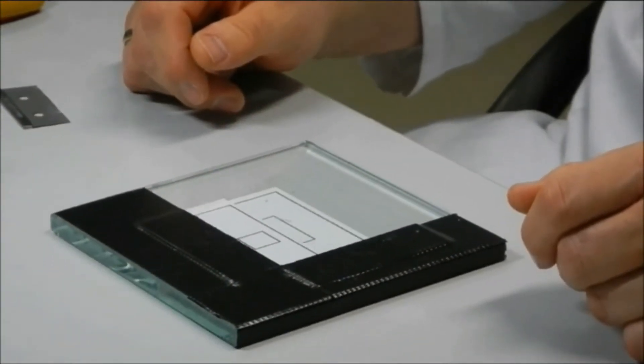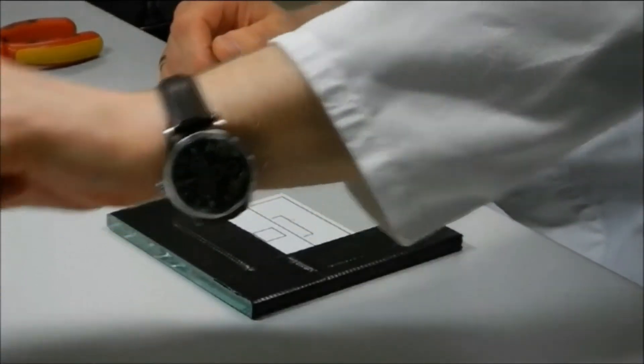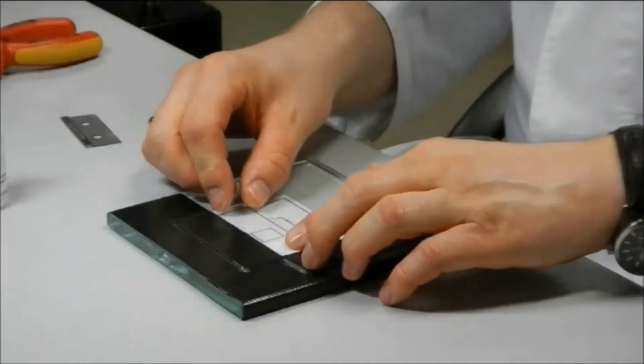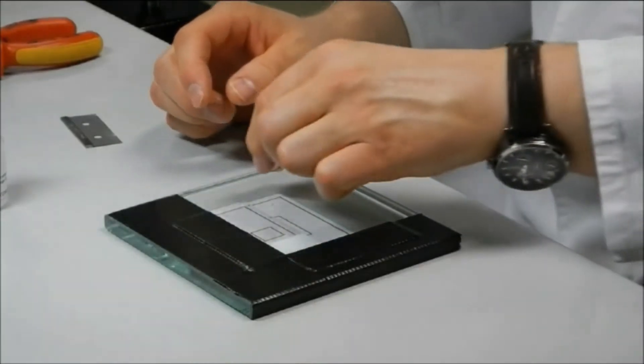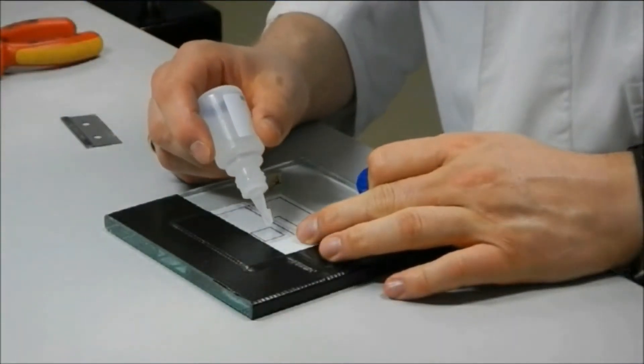To attach the sample to the glass slide, only a single drop of glue is required. The sample is then carefully positioned over the center of the slide and pressed gently down. It is now secure.